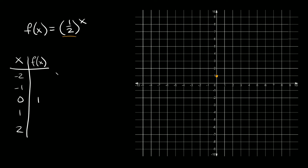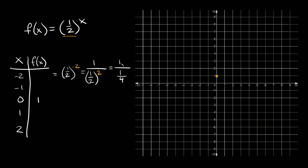Plugging in x = -2: f(x) = (1/2) raised to the -2. This equals 1 over (1/2) raised to the positive 2. To simplify the denominator, we apply the exponent to the top and bottom: 1 squared over 2 squared = 1/4. So we have 1 divided by (1/4). Dividing by a fraction means multiplying by the reciprocal, so 1 times 4/1 equals 4.